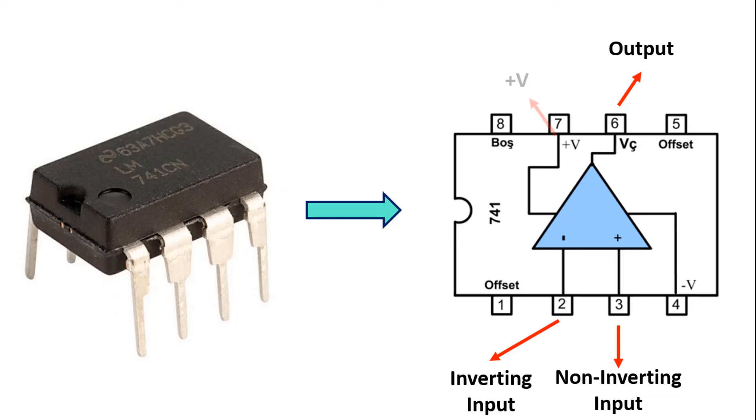Pin 7 is used for positive voltage supply, and pin 4 is used for negative voltage supply. Pins 1 and 5 are used as offset for input unbalanced voltage adjustment. These pins are not used unless necessary and are left blank. Pin number 8 is empty.